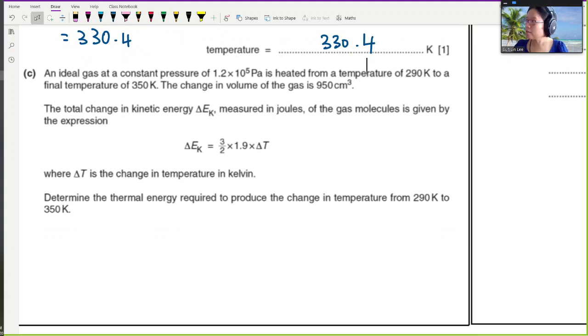All right, let's look at part C. Here, we have an ideal gas at constant pressure. Okay, let's highlight the important information. Okay, pressure is constant, and it's heated from a temperature of 290 Kelvin to a final temperature of 350 Kelvin. The change in volume of the gas is 950 cm cubed. Okay, so I'm just going to label all of this. This is P, constant. This is the temperature, so final and initial. No, wait, this is final. This is initial. And also at the same time, there's a change in volume. So I'll write this one as delta V.